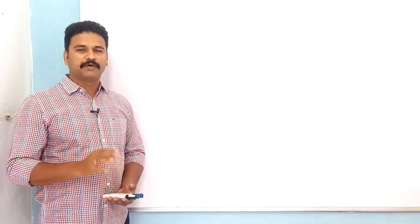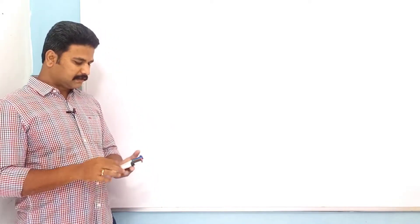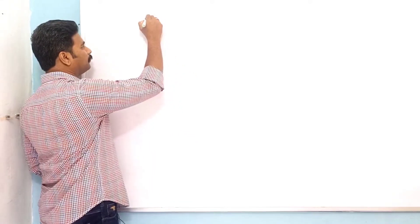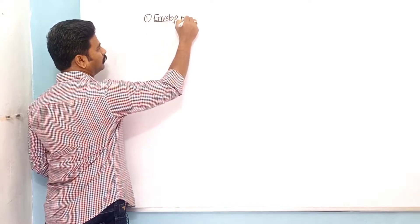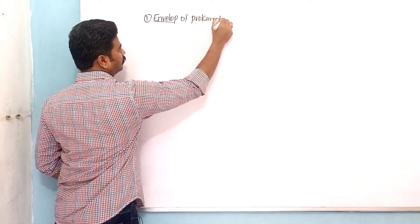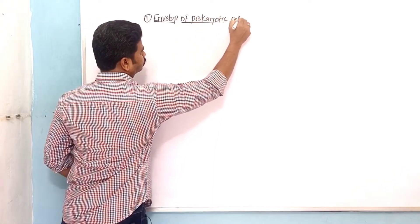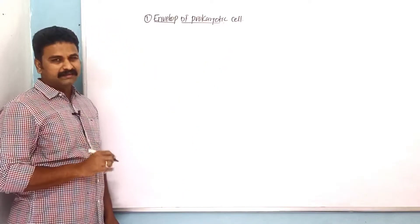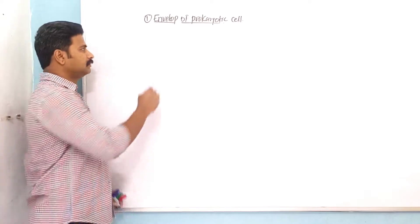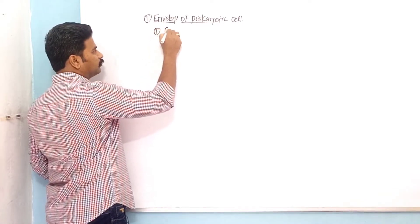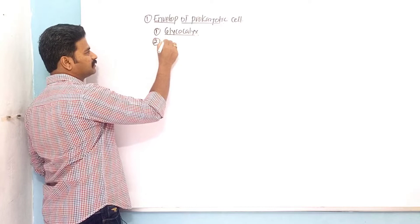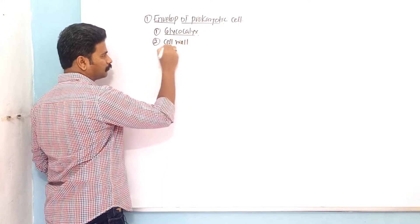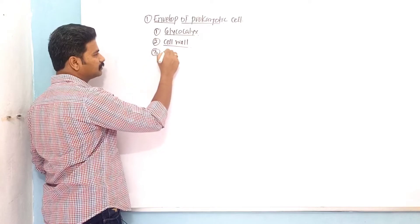In the last lecture, we have seen the structure of the envelope in a prokaryotic cell. To summarize, the envelope of a prokaryotic cell consists of three tightly bound layers. The first layer is glycocalyx, the second layer is cell wall, and the third layer is cell membrane.